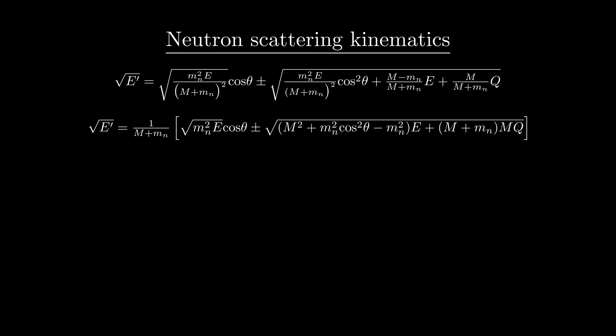Now notice that the variables that can really change in this expression for a given reaction are the angle of scattering and the reaction Q value. Everything else is just some combination of the neutron and the nucleus masses, which is a constant. If we define a new constant, big A, as the ratio of the nucleus's mass to the neutron's mass, we can get these mass-based coefficients to be a little bit simpler.